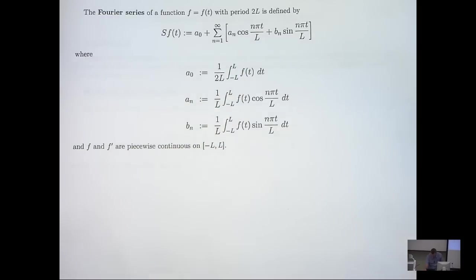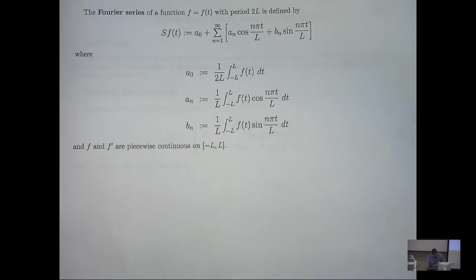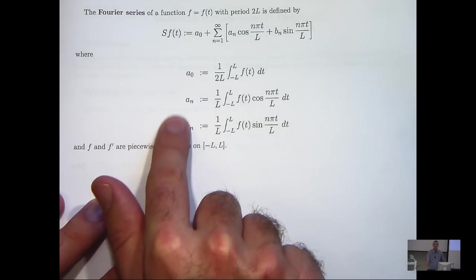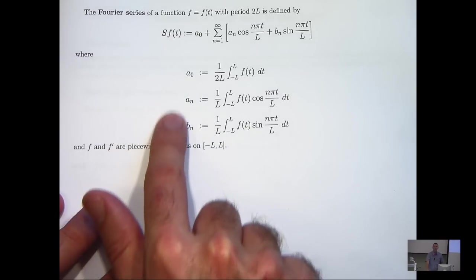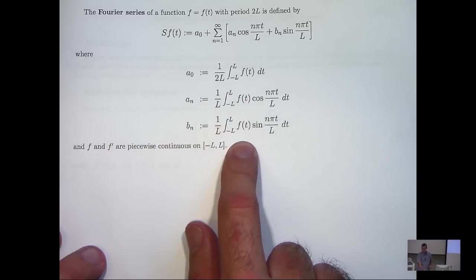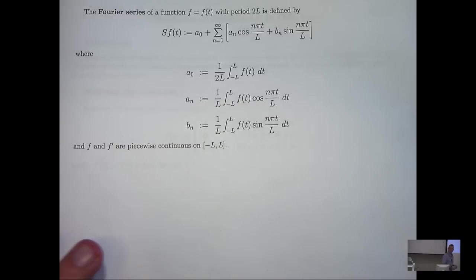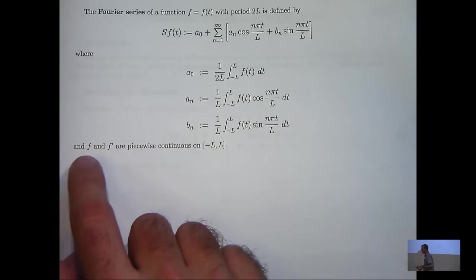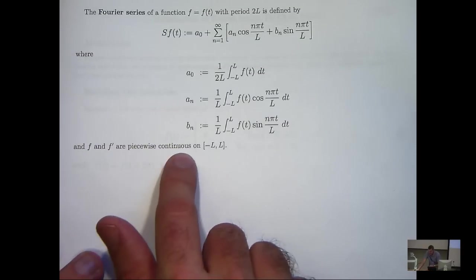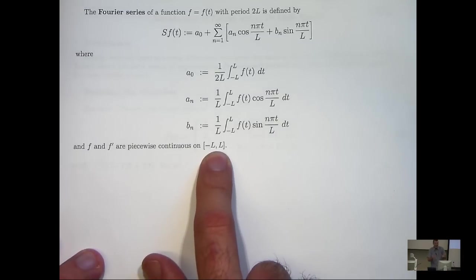When you want to calculate the Fourier series of a given function, basically we calculate these coefficients via simple integration. Now we do make some assumptions on f so that all of these are well defined and our Fourier series will also converge. We basically assume that little f and its derivative are piecewise continuous on an interval of this type.